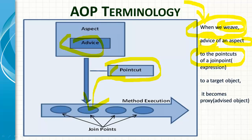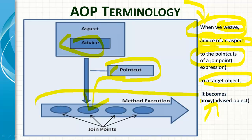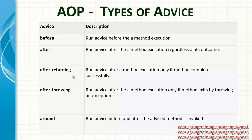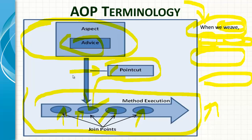Weaving is the process of applying advice of an aspect to the target object at a location defined by point cuts of a join point, to create a proxy. An aspect has advice as its implementation — this is the secondary concern. The primary concern is your business logic. You write an expression to define a point cut, and whatever the expression evaluates to are your join points — at all these join points, weaving happens. We'll see further details including before, after, after-returning, after-throwing, and around advice types with associated examples.